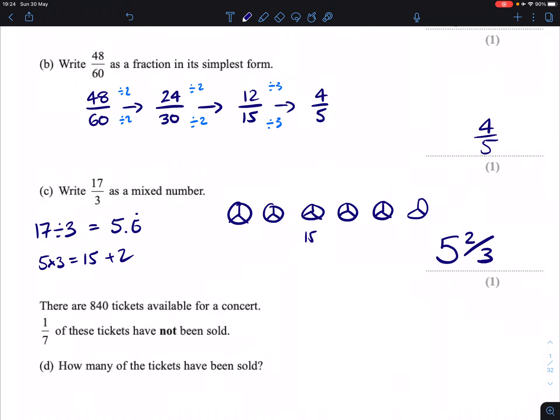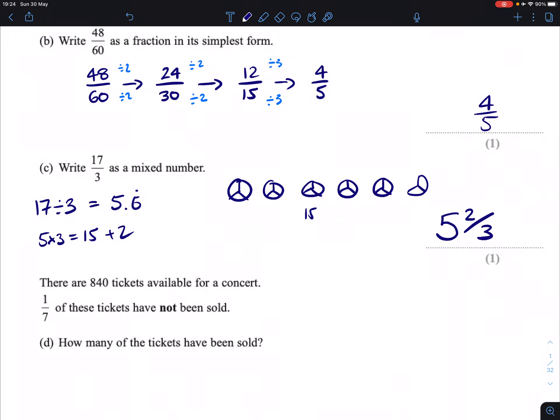There are 840 tickets available for a concert. 1 seventh of these tickets have not been sold. How many of the tickets have been sold?